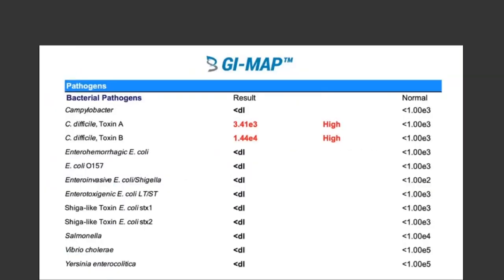Looking at the GI MAP results, C. diff toxin genes were present. Most cases of C. diff detected are asymptomatic — patients tend to be carriers and not necessarily have significant symptoms. Only a subset seem to have significant symptoms. In most cases, it is not necessarily related directly to symptoms, but can still give clues that there are likely imbalances in the gut, often related to poor digestion.